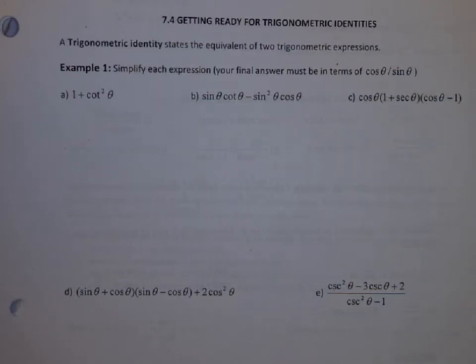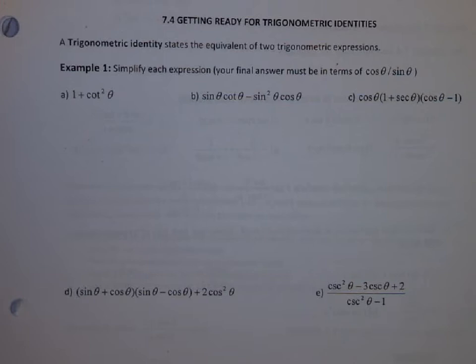For example, tangent theta equals sine theta over cosine theta is a trig identity, or cosine squared x plus sine squared x equals 1 is a trig identity.